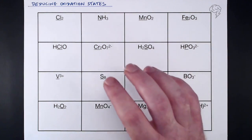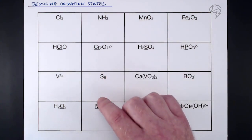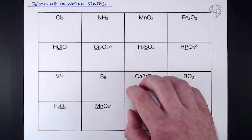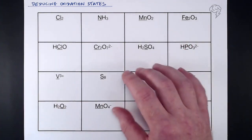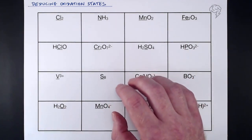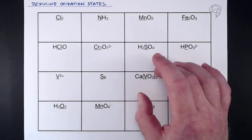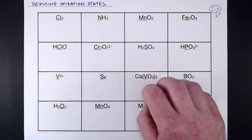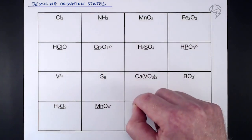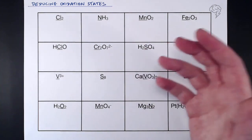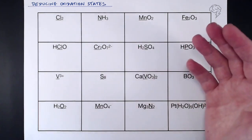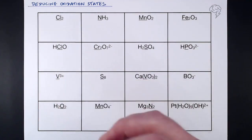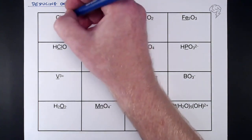Right now we're going to look at applying the rules learned in the previous tutorial — deducing oxidation states of elements within compounds, ions, or just elements. You need to be able to find oxidation states of individual elements before looking at whole equations and changes in oxidation states. PDFs are available below, or you can work on paper. If you're confident, try them first and check your answers at the end.